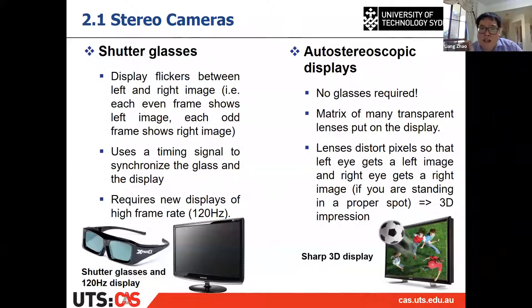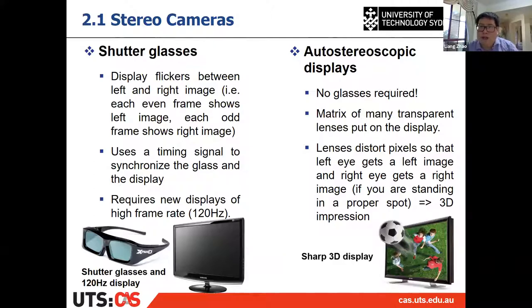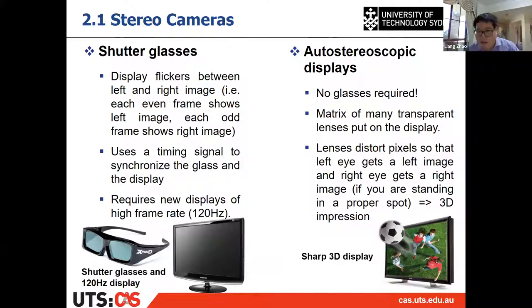When it displays the right image, the shutter glasses will shut the left glass, so your right eye only sees the right image. The left and right images are displayed one by one, alternating. This kind of display requires two things: first, a very high frame rate — always about 120 Hz — and second, the shutter glasses must be synchronized with the display.